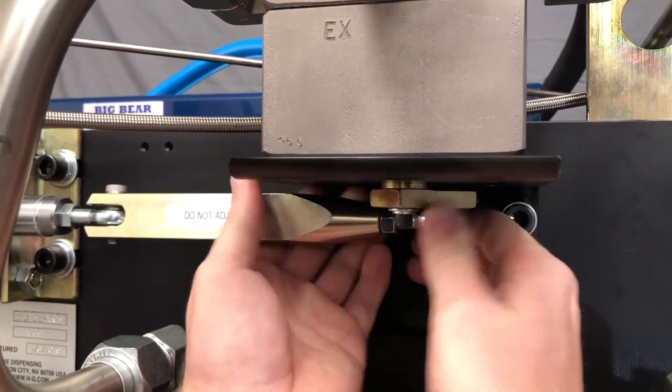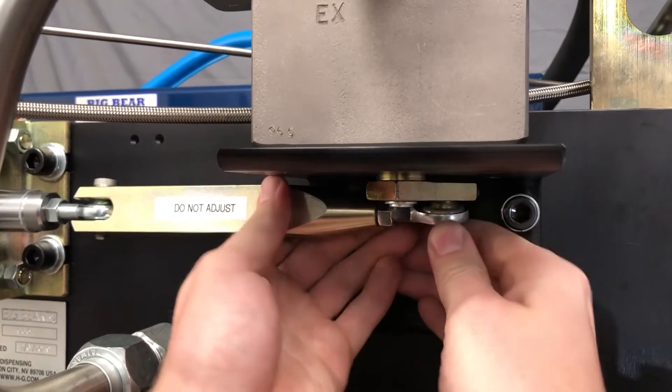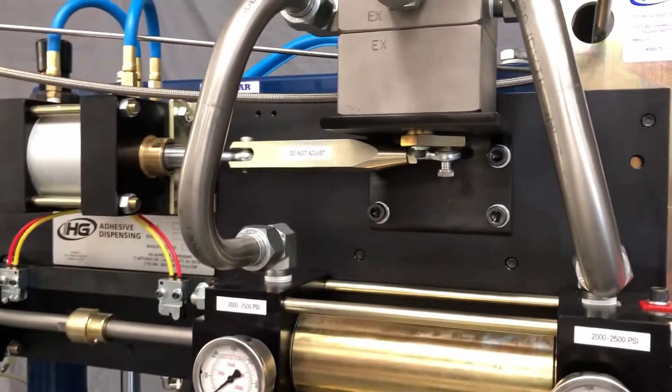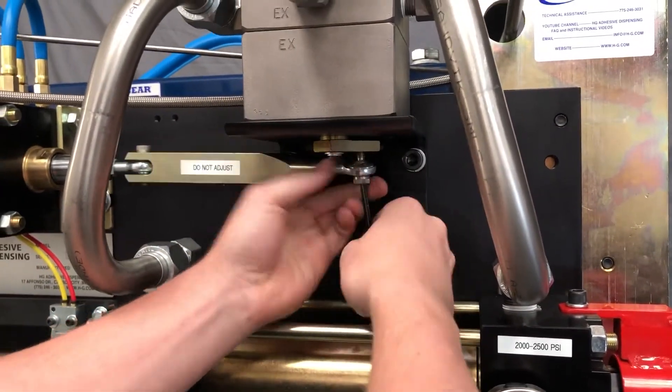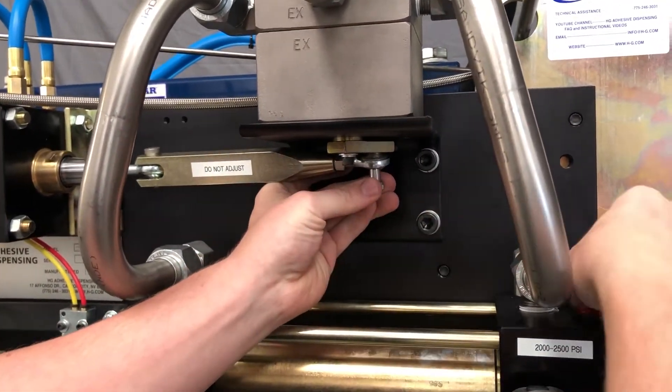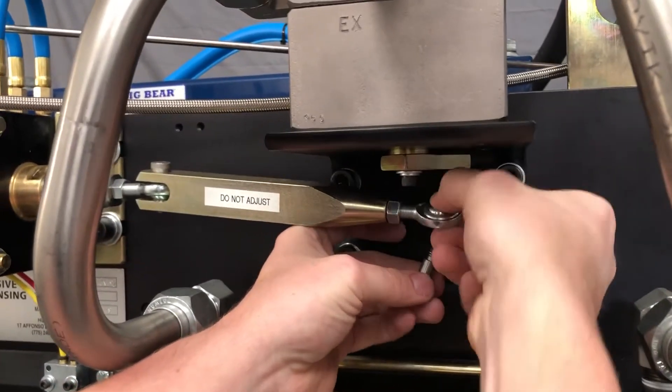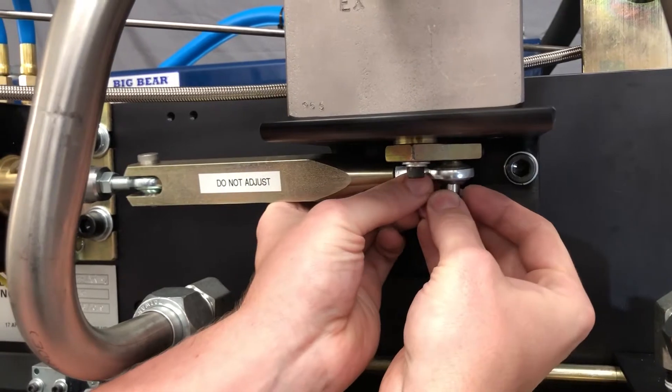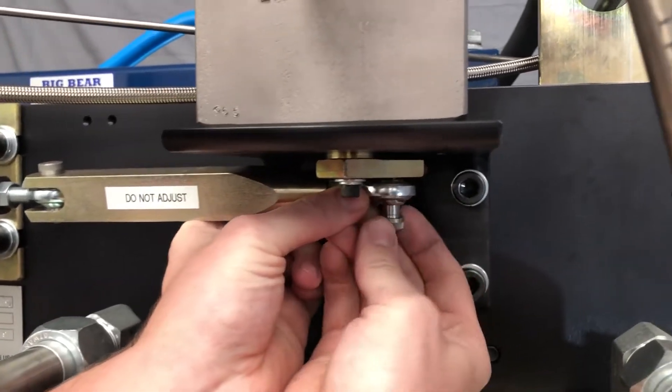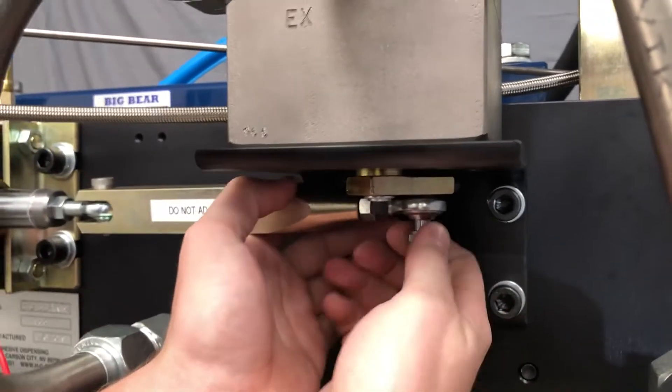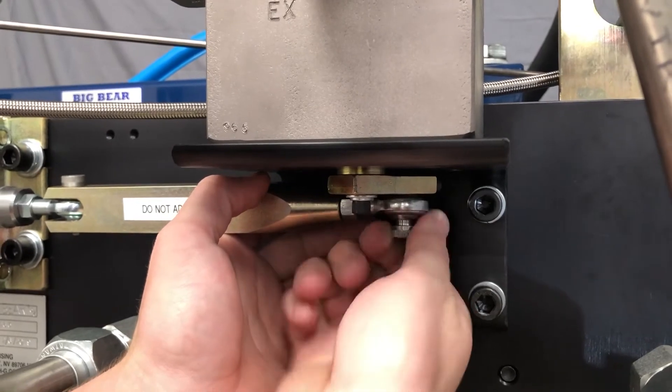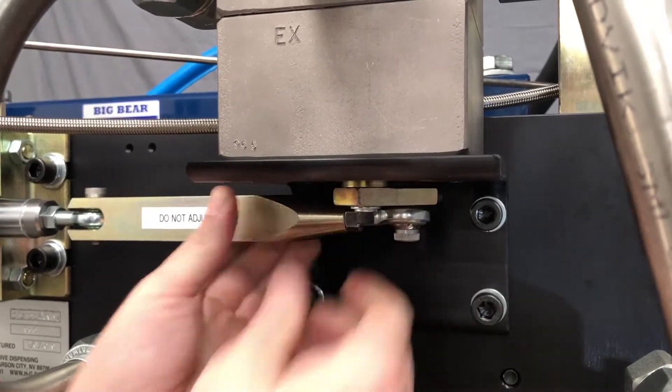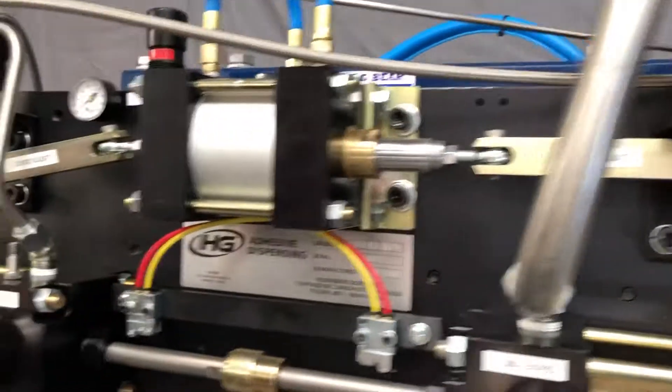I almost got it. You can tell it's still kind of tight there. I'm going to need my wrist to get it out. I can give it one more half turn. I'm able to get that in finger tight. Now I'm going to go over and do the same thing on the other side.